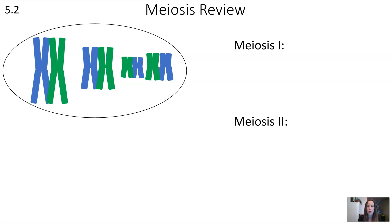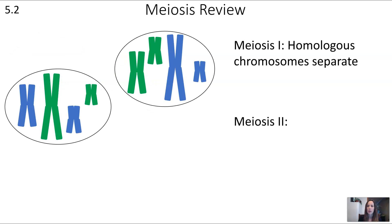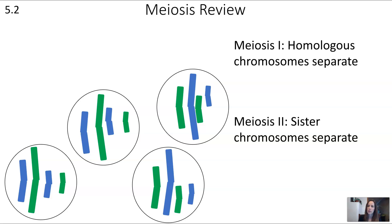In meiosis 1 we get a separation of the homologous chromosomes. So in the two cells after that first division, we have four chromosomes in each cell, still in their duplicated form with two chromatids each. Then in meiosis 2 we get the separation of sister chromatids, so we end up with four chromosomes with one chromatid each — four chromosomes, four chromatids.